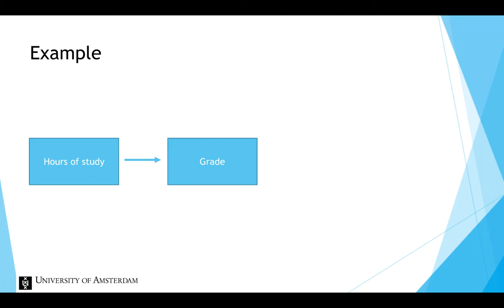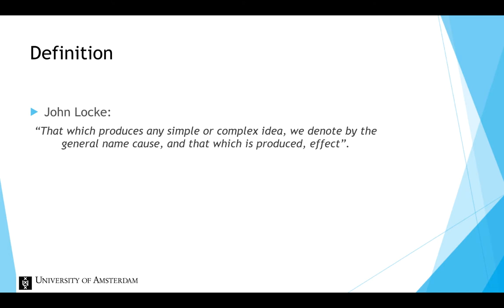Despite this familiarity with causal relationships, philosophers have been arguing for centuries about the precise definition of cause and effect. It was John Locke who stated that that which produces any simple or complex idea, we denote by the general name cause, and that which is produced, effect.